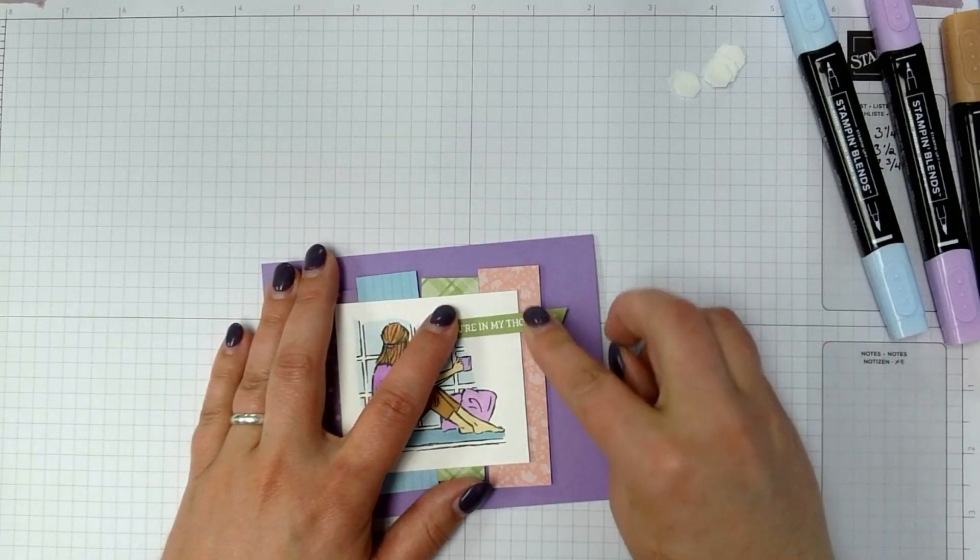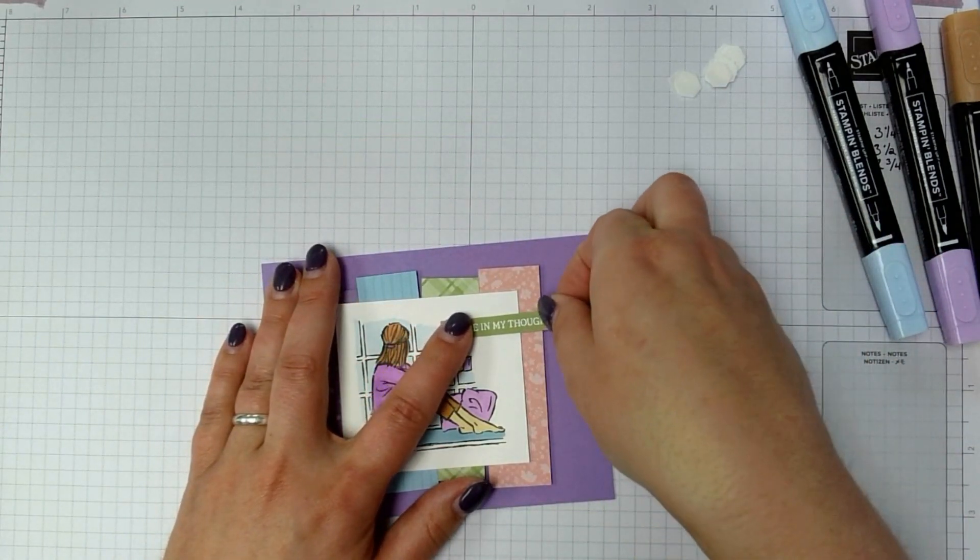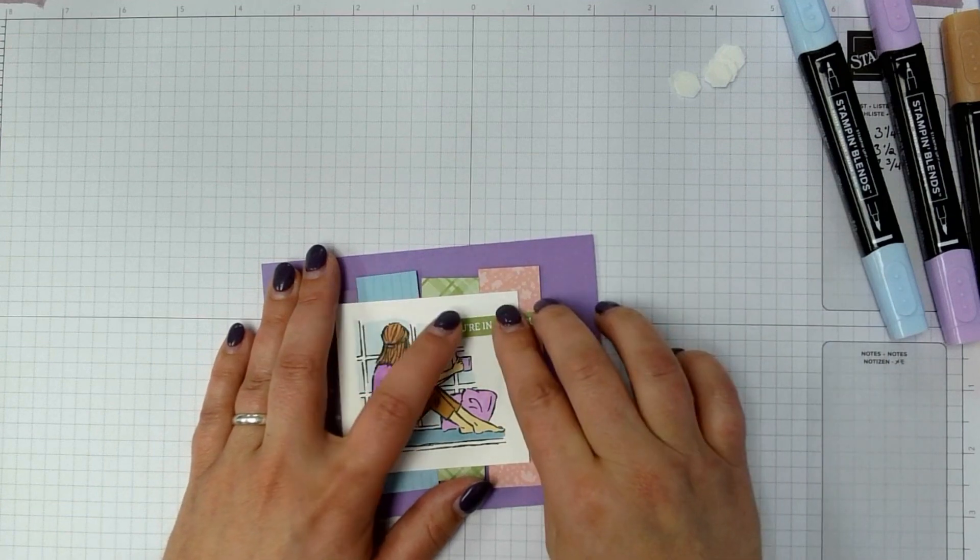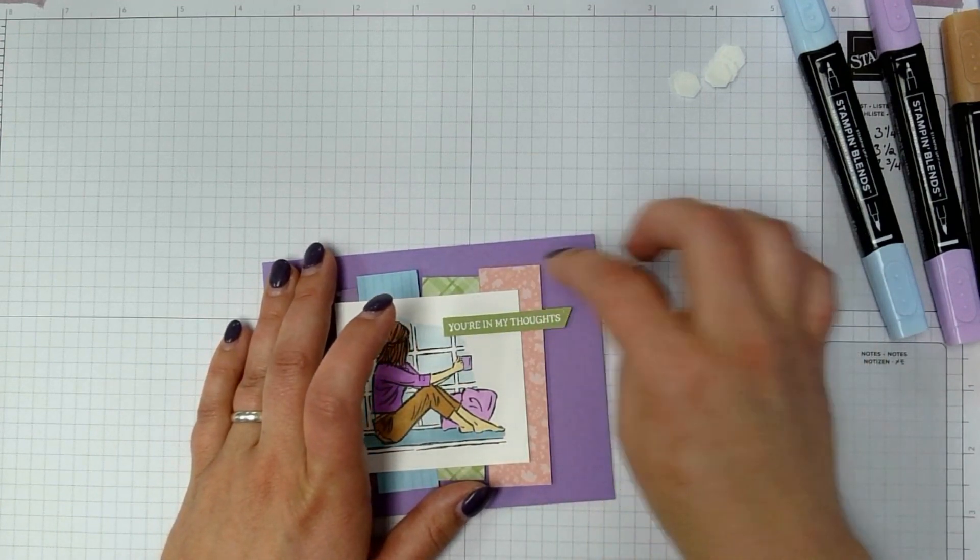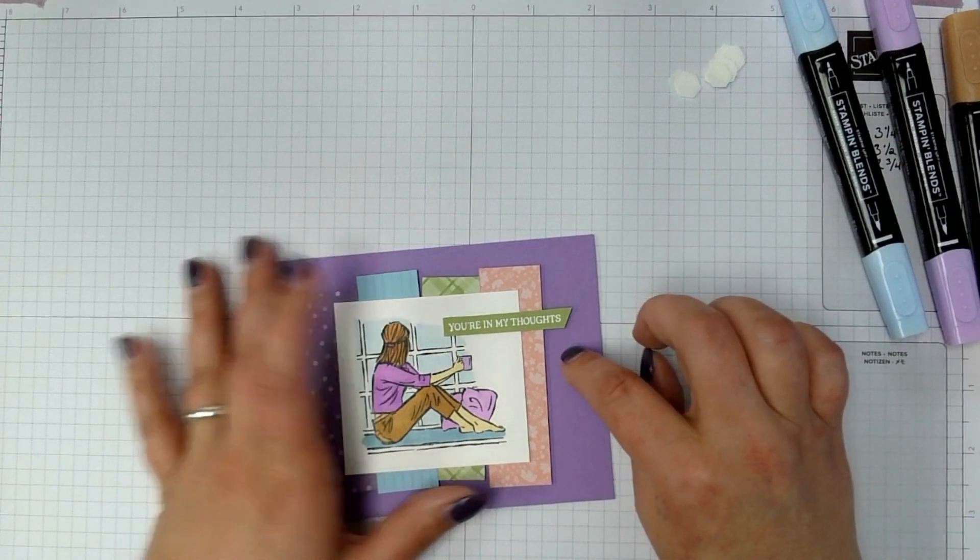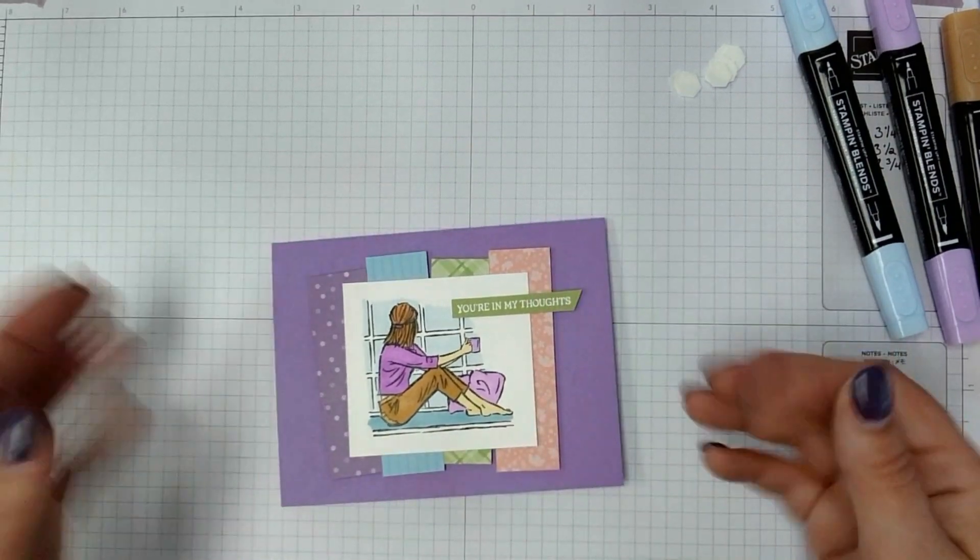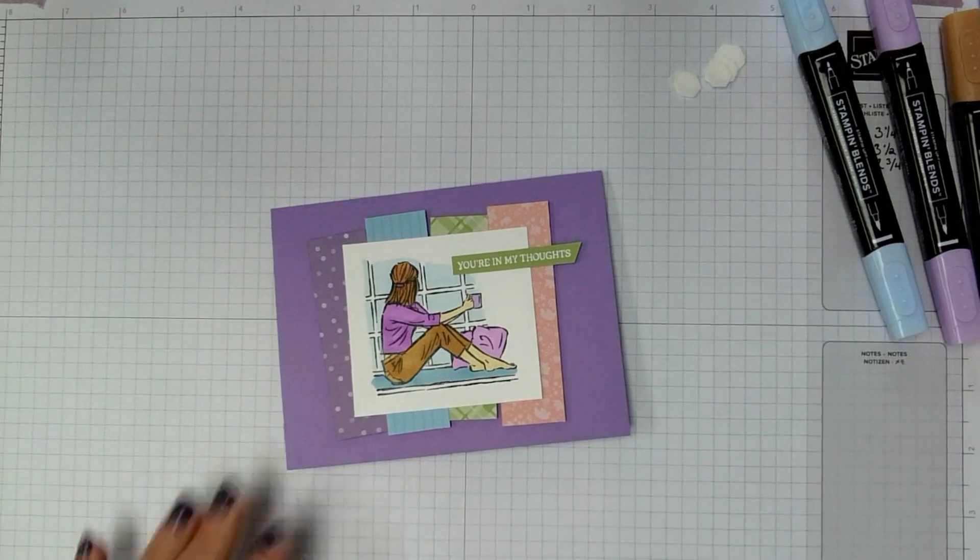Okay, so this piece goes here. You want to make sure that that dimensional that we put there on the right is hanging off of this. You want it to stick to your card base, not to your DSP there.